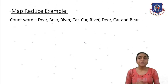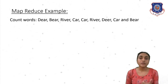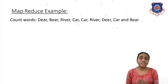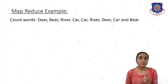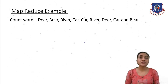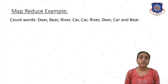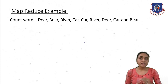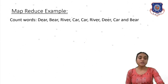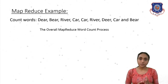Now for an example, we have to count words. The example words are: deer, beer, river, car, car, river, deer, car, and beer. Here 'car' appears three times, 'river' appears two times, 'deer' appears two times, and 'beer' appears two times. We have to count the number of repeated words. The overall MapReduce word count process will be demonstrated in the diagram.